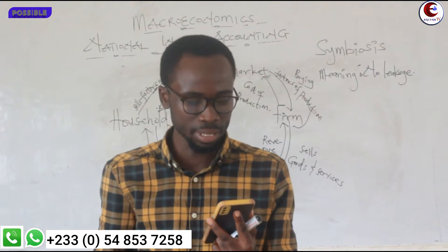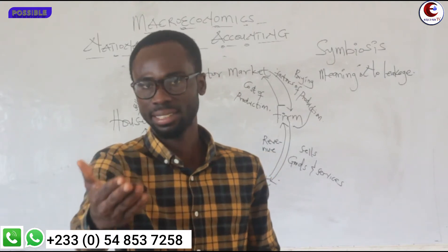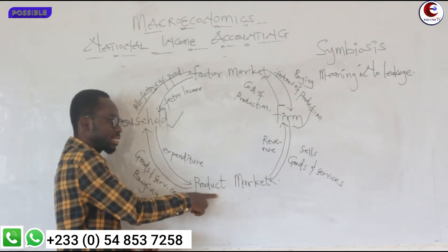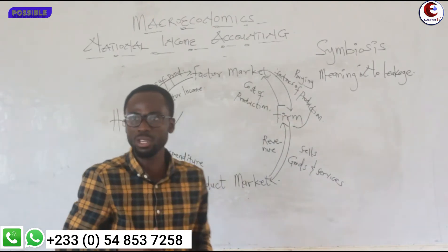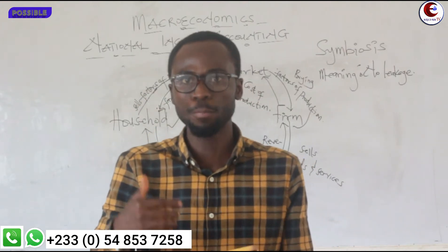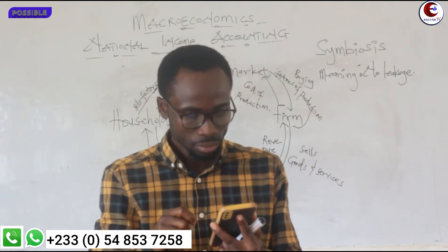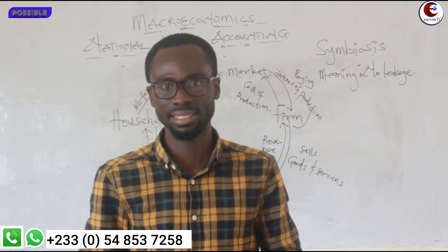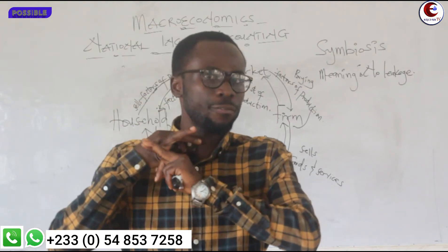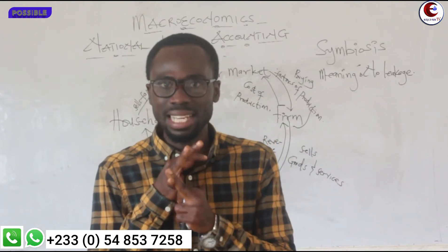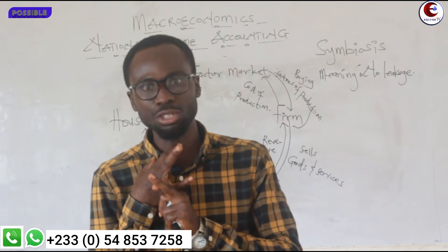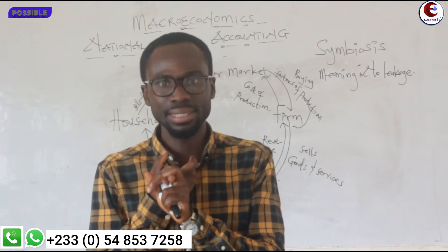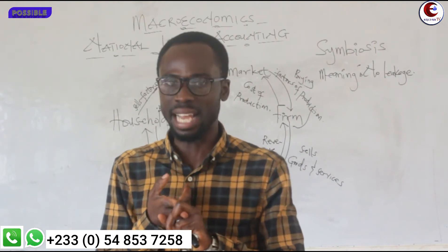We also assume that all income received is spent — all factor income received by the household is spent on the product markets. We also assume that there are only two economic agents or entities that exist. So: no government intervention, all goods produced are sold, and all incomes are spent. These are the assumptions under the circular flow model.